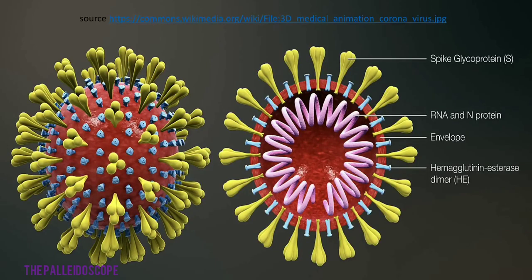This is the diagram of coronaviruses. The yellow ones are the spike glycoprotein, and the smaller blue ones are heme agglutinin esterase dimer, that is HE protein. The pink one in the middle is RNA and N protein — the nuclear material. Since it is an enveloped virus, the envelope is present.